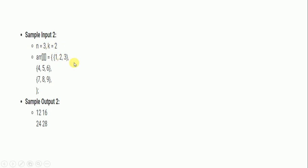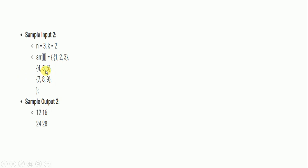Sample Input 2: N equals 3, K equals 2. The matrix is 3×3 with elements 1 2 3 / 4 5 6 / 7 8 9. We need to find all 2×2 sub-matrices and print their sums. The four possible sub-matrices are: {1,2,4,5} with sum 12; {2,3,5,6} with sum 16; {4,5,7,8} with sum 24; and {5,6,8,9} with sum 28.